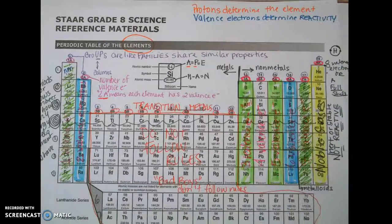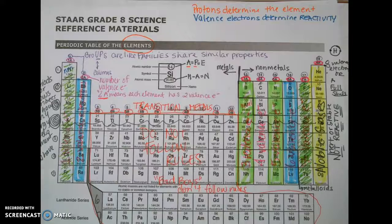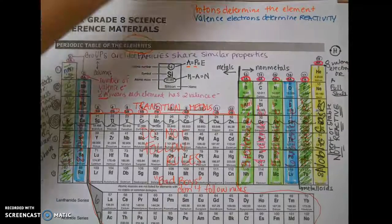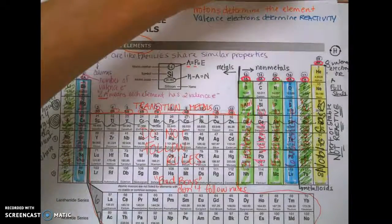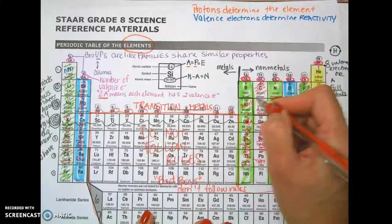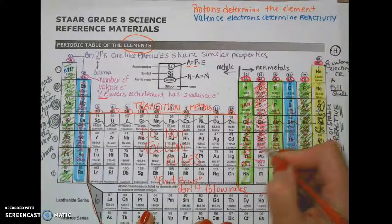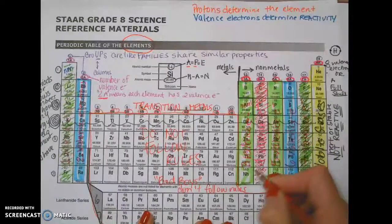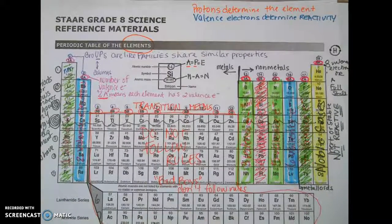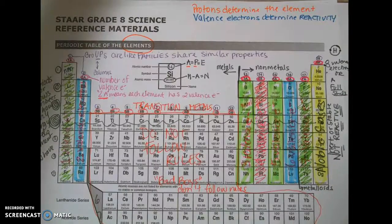And last but not least, we have group 14. Members of group 14 all have four valence electrons. Members of group 14 are going to want to bond with members of their own group. So they're going to stick to one another and bond with each other — we're just going to shade them all in red.